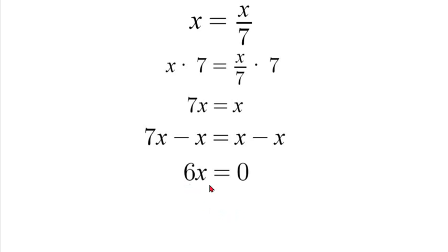Now we want x to be by itself. So what we're going to do is divide both sides by 6. And 0 divided by anything is just 0.